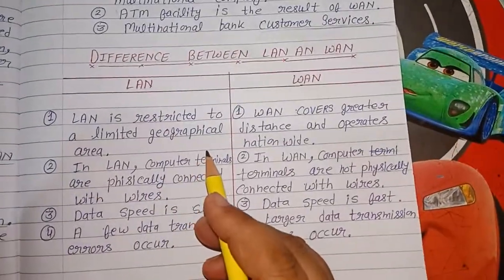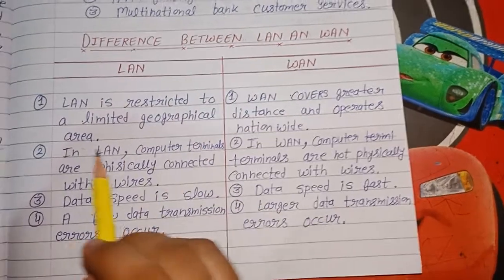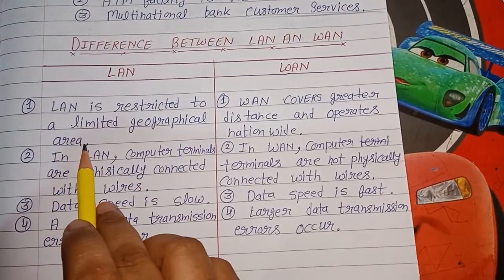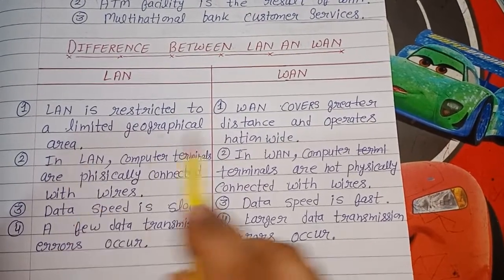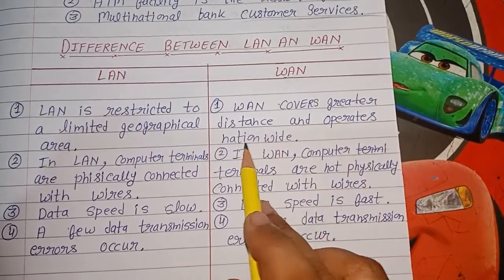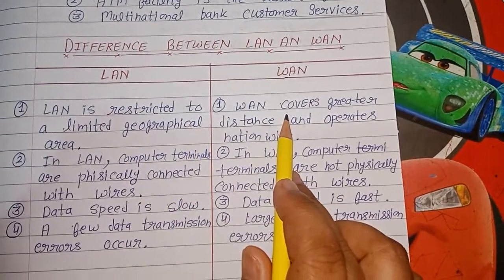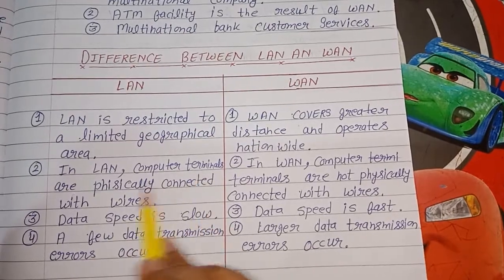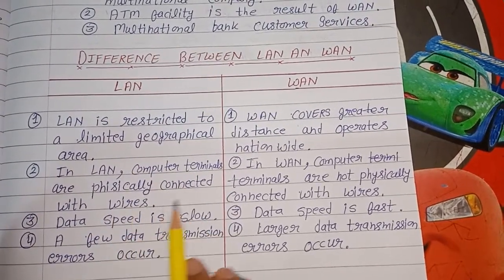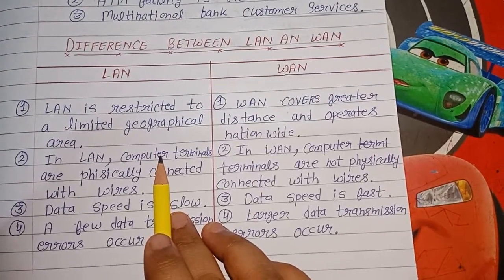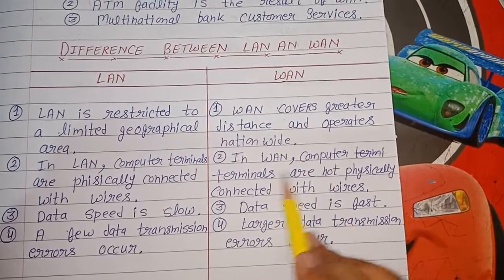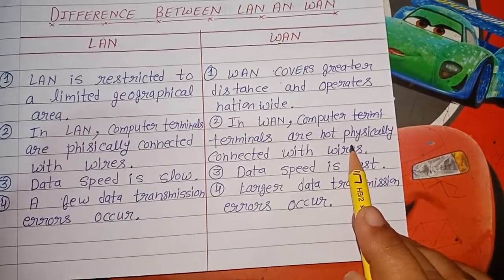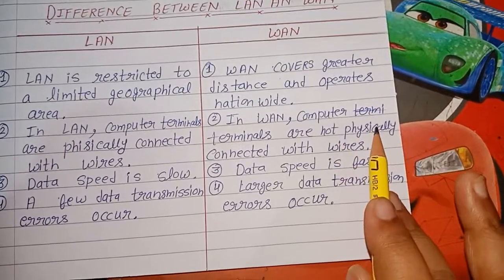Now we know what is the difference between LAN and WAN. The basic difference: first, LAN is restricted to a limited geographical area, whereas WAN covers greater distances or operates nationwide — means WAN larger area cover करता है LAN से. And in LAN, computer terminals are physically connected with wires. In WAN, computer terminals are not physically connected with wires — they connect through telecommunication and satellite signals.